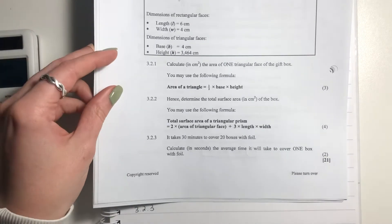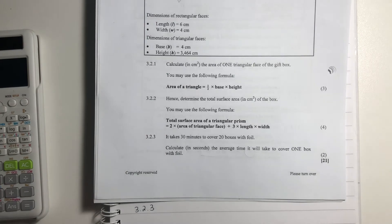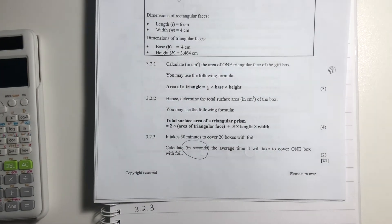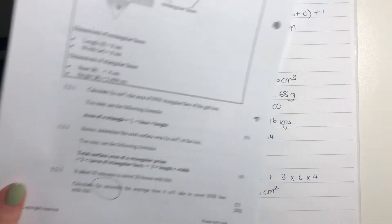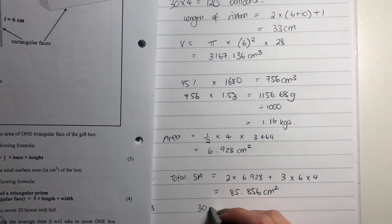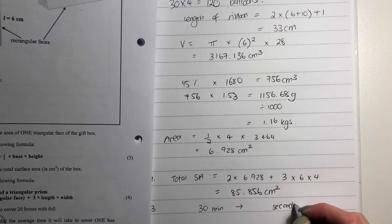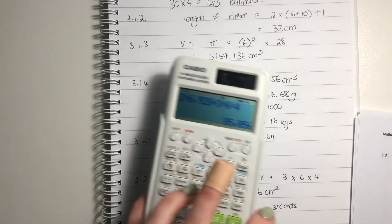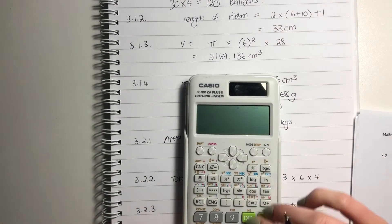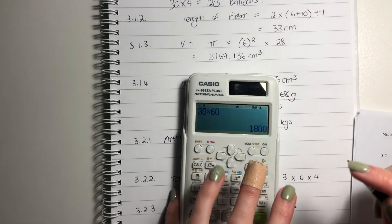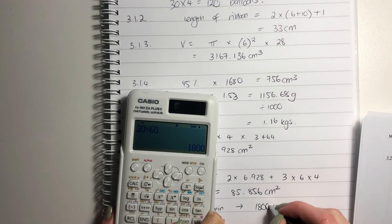Okay. So it says it takes 30 minutes to cover 20 boxes with foil. Calculate in seconds the average time it will take to cover one box. So first thing we're going to do is we say, well, 30 minutes, what's that in seconds? Well, how many seconds are there in a minute? 60. 30 times 60. It is this many seconds. Okay.